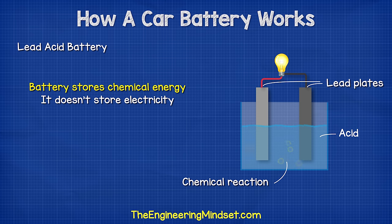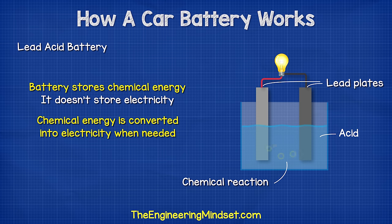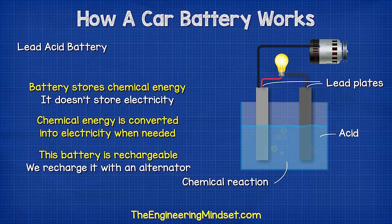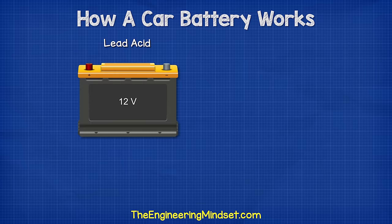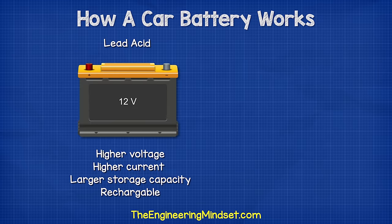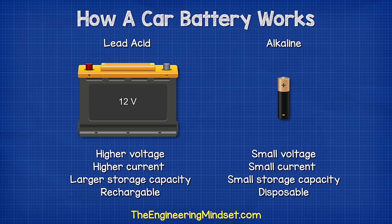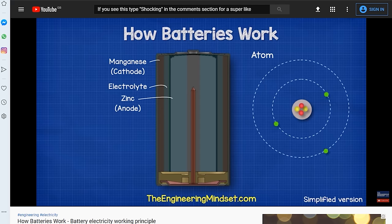This chemical energy is converted into electrical energy whenever we need it. This battery is also rechargeable — if we supply the battery with electricity then we can reverse the chemical reaction and recharge the battery. These types of battery provide large amounts of current, especially compared to typical smaller household alkaline batteries.